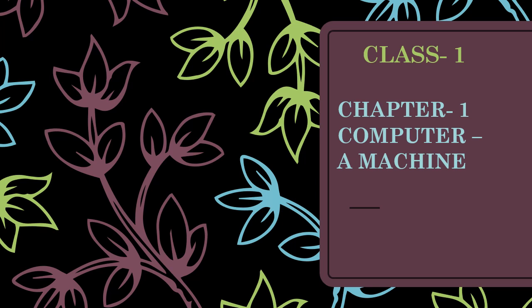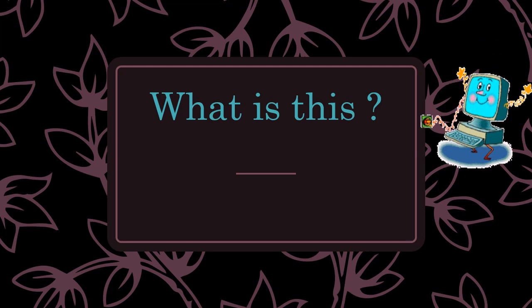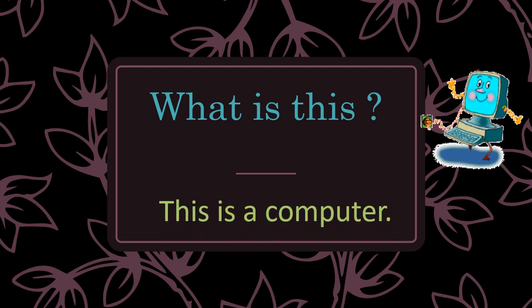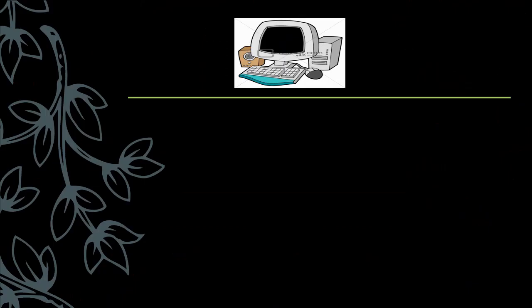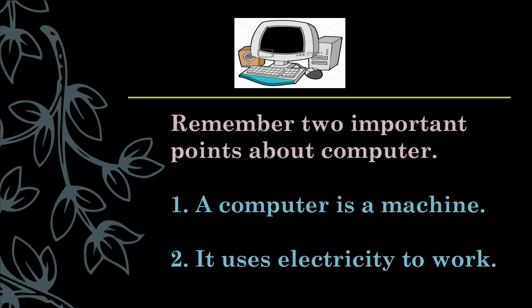In this chapter we will learn about computer. This chapter is divided into two videos, means two parts. This is part 1. What is this children? This is a computer. Always remember two important points about computer. First, a computer is a machine. Second, it uses electricity to work.